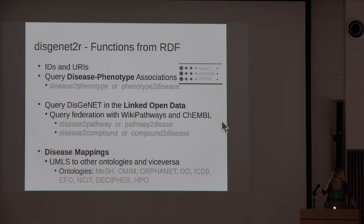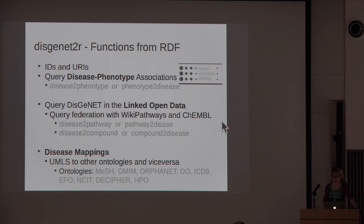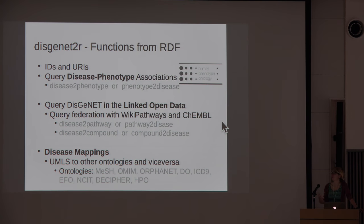Functions querying RDF data include retrieving disease-phenotype associations from HPO, and federation queries for disease-to-pathway, pathway-to-disease, or disease-to-compound and compound-to-disease data. There is also a disease mapping service: if you want to query a rare disease and have an Orphanet ID but need the corresponding UMLS concept, you can use this function to search DisGeNET.